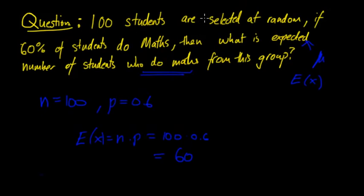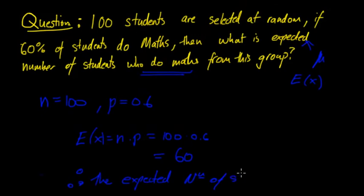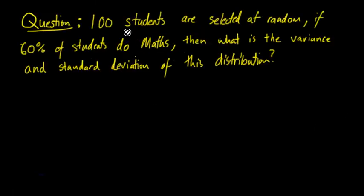From the formula, E(X) = np, which equals 100 × 0.6 = 60. As it's a worded question, you probably do want to give a worded answer. Therefore, the expected number of students who do math is 60.